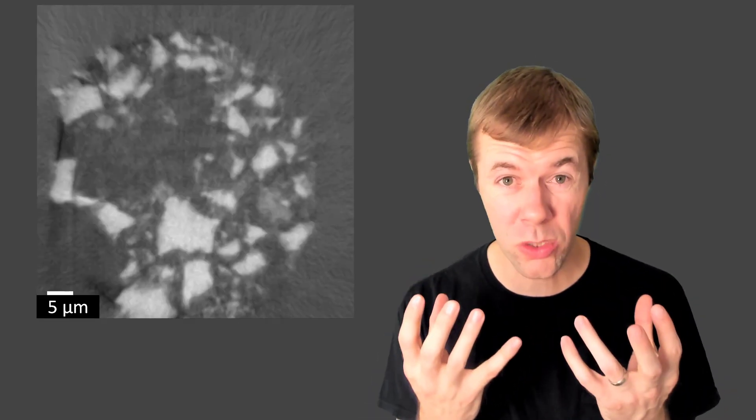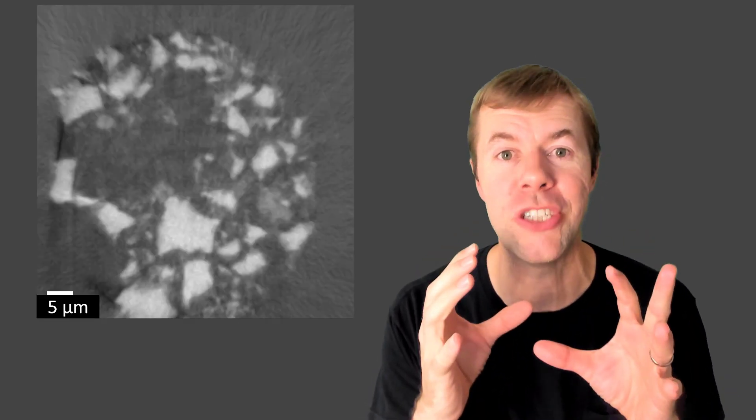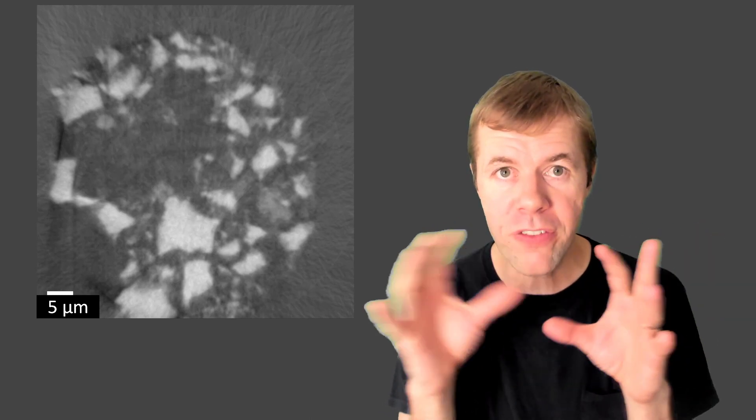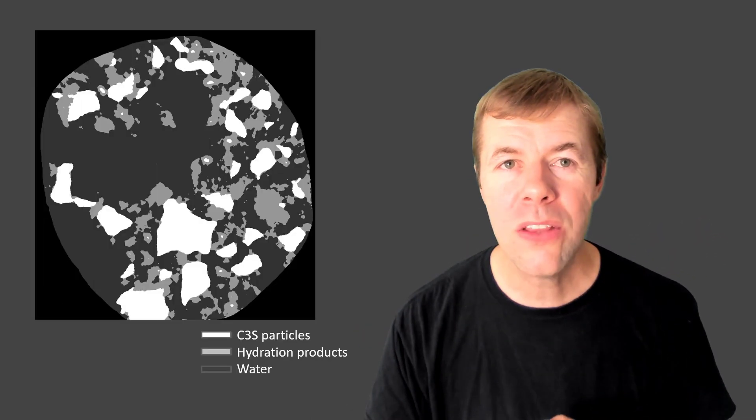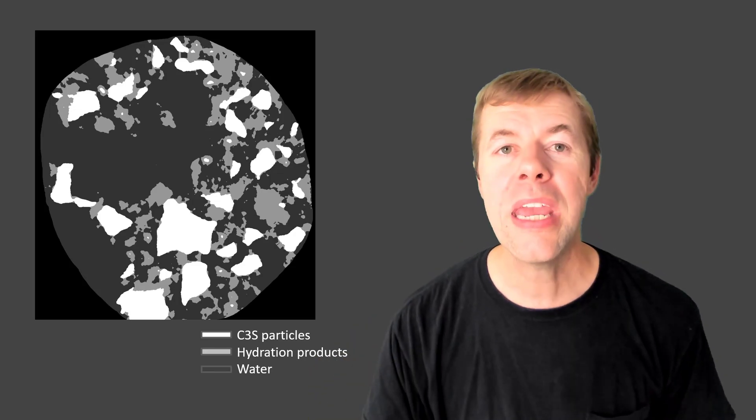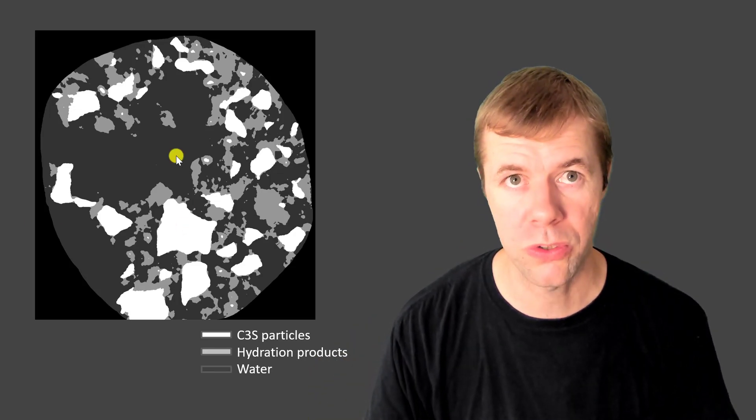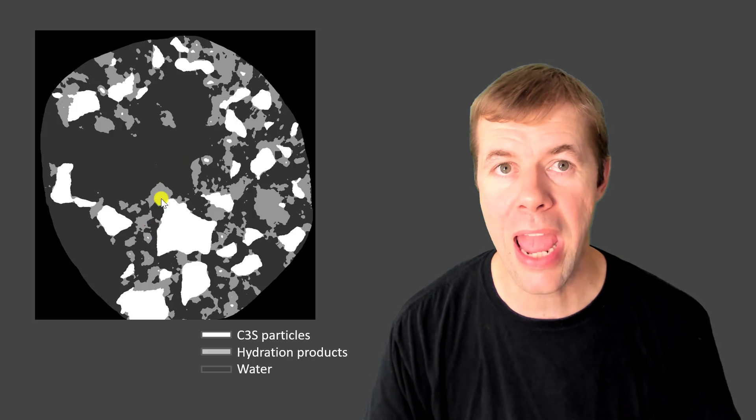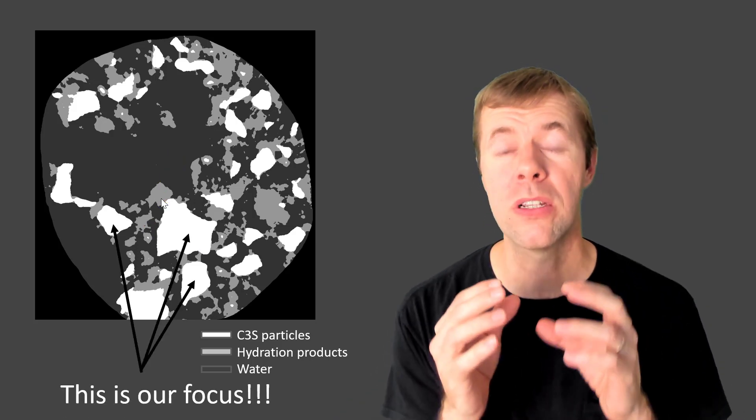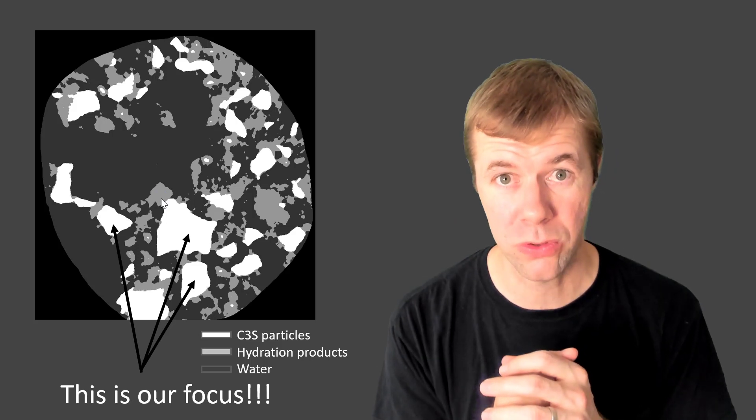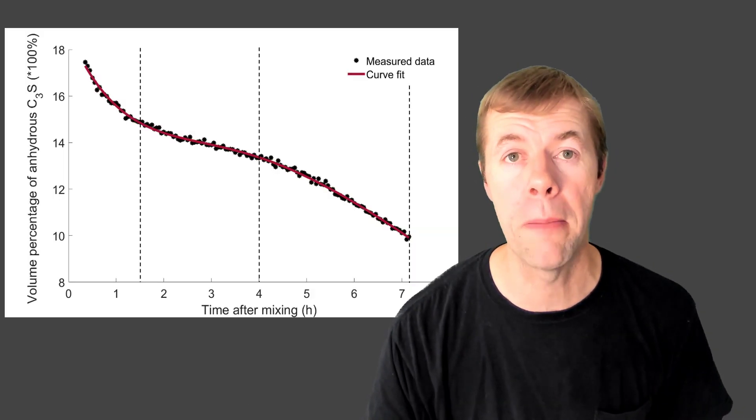This is what a cross-section looks like and we're gonna use computer vision to turn all of this gray value stuff that's kind of hard to see what's going on into different materials, into cement particles, water filled space, and hydration products. But today we are gonna focus on these cement particles, these C3S particles and how they change over time.